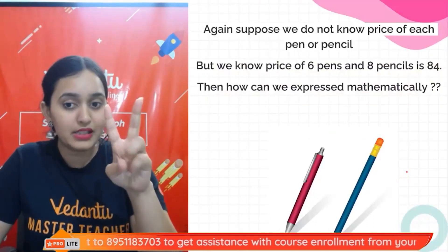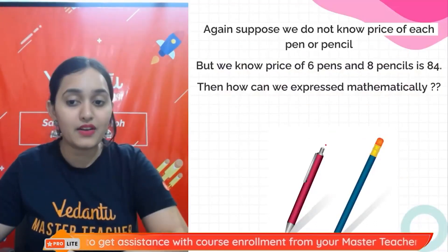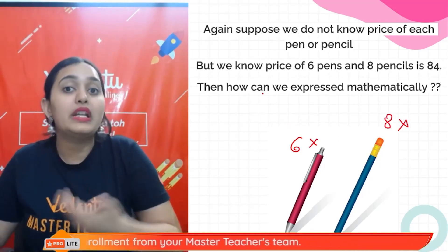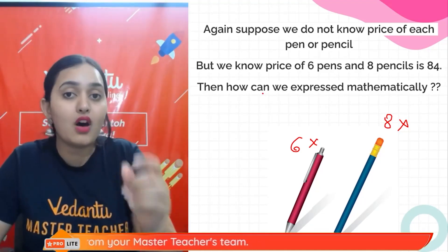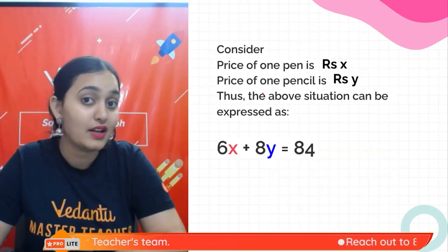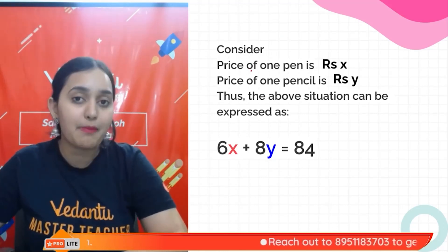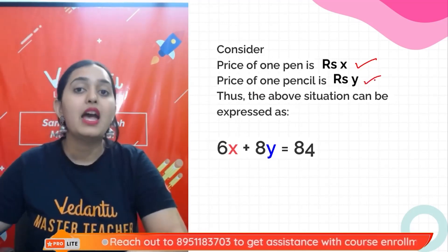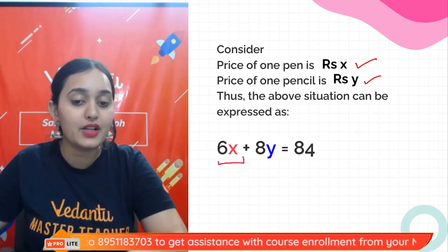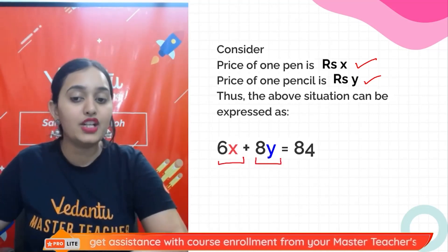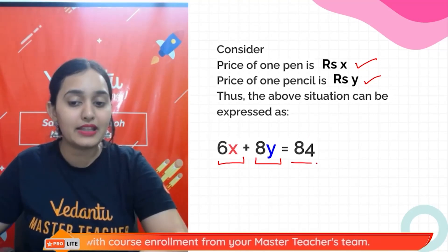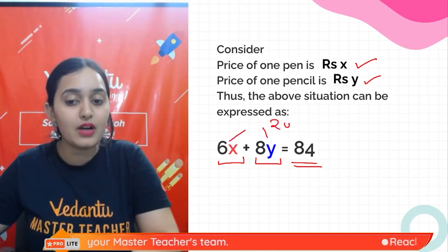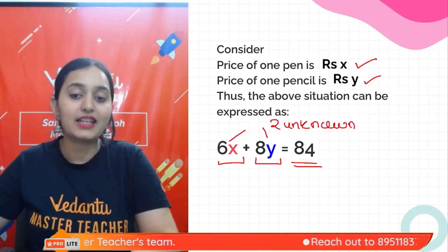Now, what scenarios give us linear equations in two variables? Imagine we know neither the cost of the pen nor the cost of the pencil — both are unknown. We assume the price of one pen is x rupees and one pencil is y rupees. The equation becomes: 6x + 8y = 84. This is a linear equation in two variables.